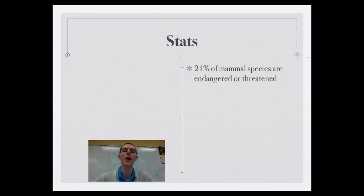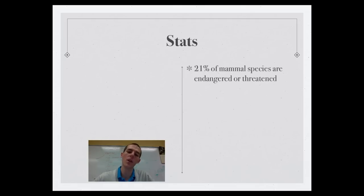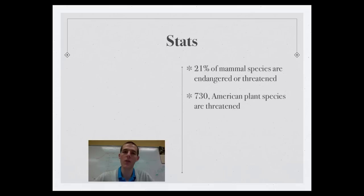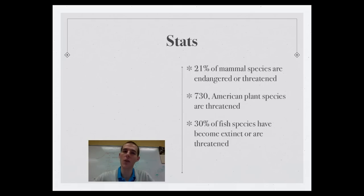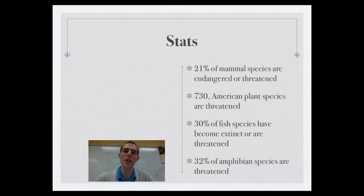Here are some stats to bring this home: 21% of animal species around the world are endangered or threatened. In America, 730 plant species are threatened. Globally, 30% of fish species have become extinct or are presently threatened. And 32% of amphibian species are threatened or endangered. Big chunks of the living world are under threat from human actions.